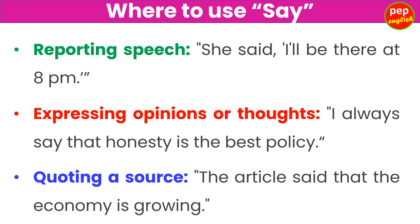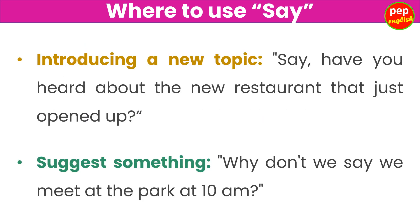Where to use say? Reporting speech: she said, I'll be there at 8pm. Expressing opinions or thoughts: I always say that honesty is the best policy. Quoting a source: the article said that the economy is growing. Introducing a new topic: say, have you heard about the new restaurant that just opened up? Making a suggestion: why don't we say we meet at the park at 10am?